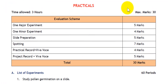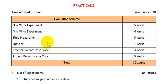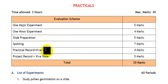Here is some information regarding the practicals which carry 30 marks. There is 1 major experiment of 5 marks, 1 minor experiment carrying 4 marks, slide preparation will be of 5 marks, spotting carries 7 marks, the practical record and VIVA will be of 4 marks, and the project record and VIVA relating to it will be of 5 marks.